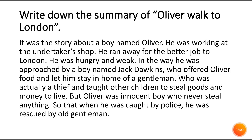He was working at the undertaker's shop. He ran away to London for a better job. He was hungry and weak. On the way, he was approached by a boy named Jack Dockwin, who offered Oliver food and let him stay in the home of a gentleman who was actually a thief and taught other children to steal goods and money to live. But Oliver was an innocent boy who never stole anything, so when he was caught by the police, he was rescued by an old gentleman.